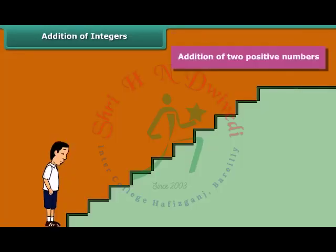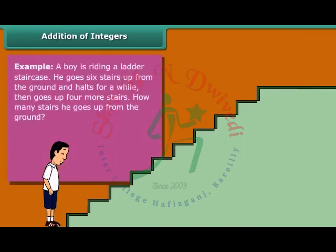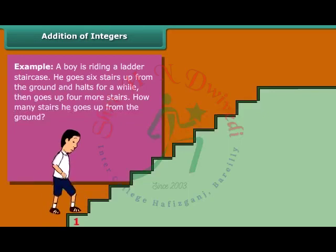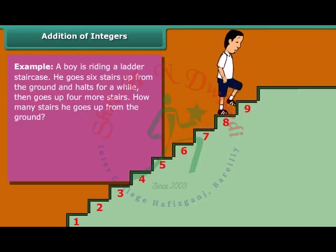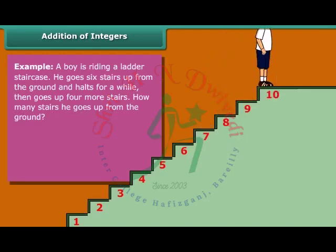Addition of two positive numbers. Example: A boy is riding a ladder staircase. He goes six stairs up from the ground and holds for a while, then goes up four more stairs. How many stairs he goes up from the ground? Plus 6 plus plus 4 is equal to plus 6 plus 4 which equals plus 10.